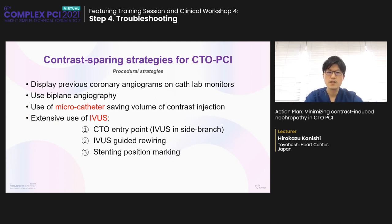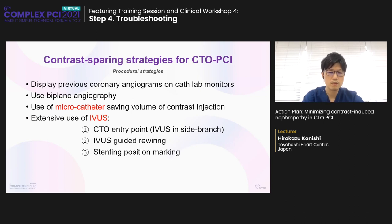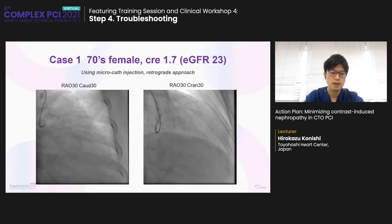Contrast volume to creatinine clearance ratio below 2 is the target value, and below 1 is ideal to prevent AKI. In this presentation, I'll discuss the procedural strategies to reduce contrast media. Displaying the previous coronary angiogram on the cath lab monitor and using biplane angiography is a matter of course. The key point is how we can use the microcatheter and IVUS effectively.